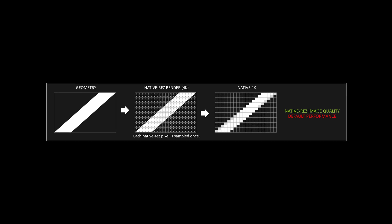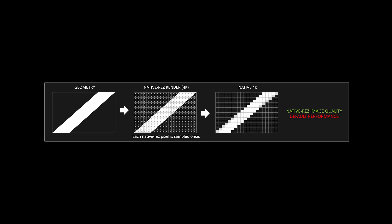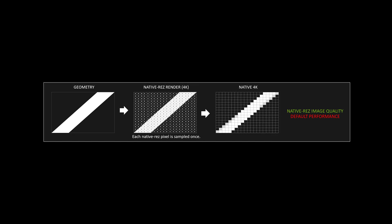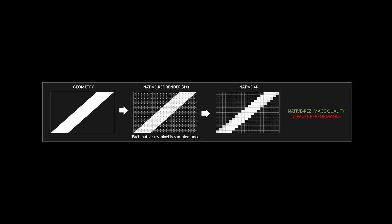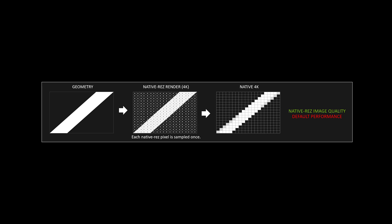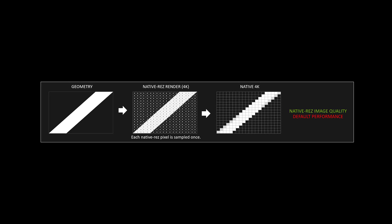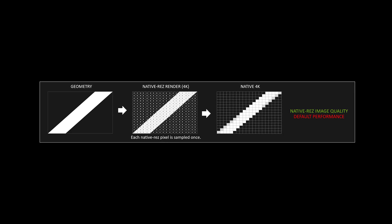So first, what is native resolution? Native resolution is the traditional way of rendering where the GPU renders every individual pixel at your output resolution. But does brute force rendering every pixel guarantee that you will automatically get better image quality?